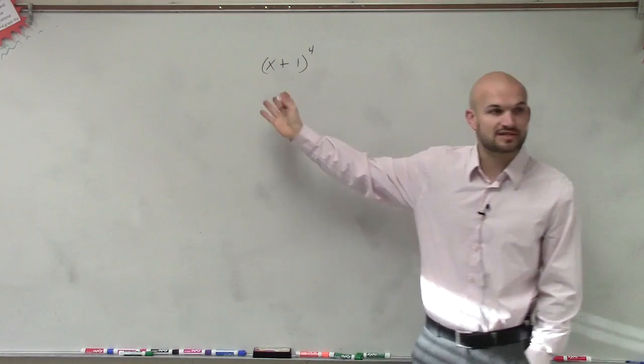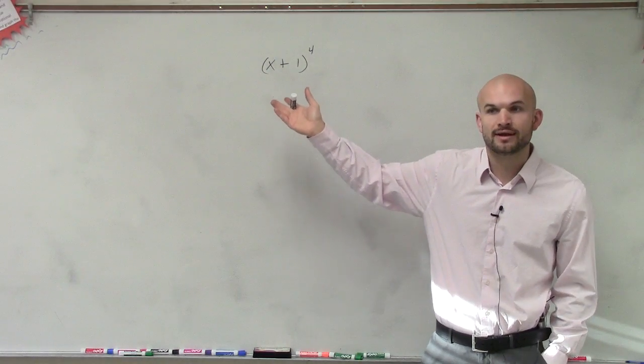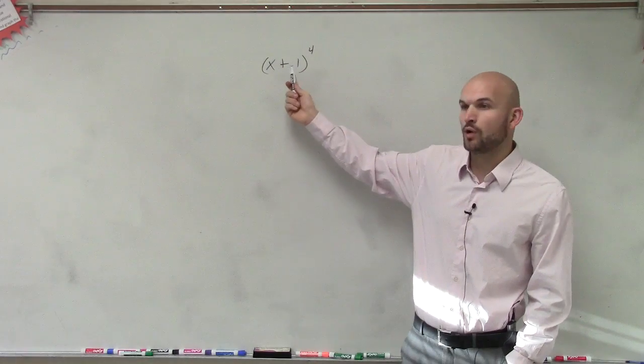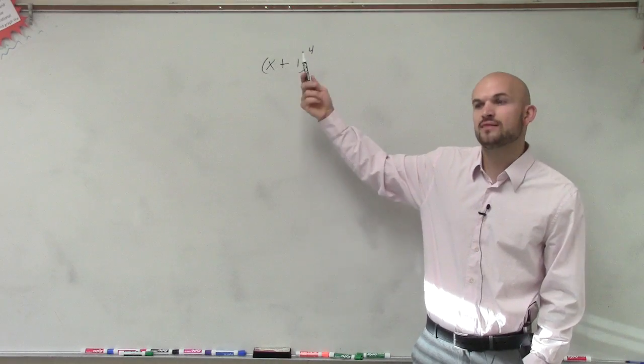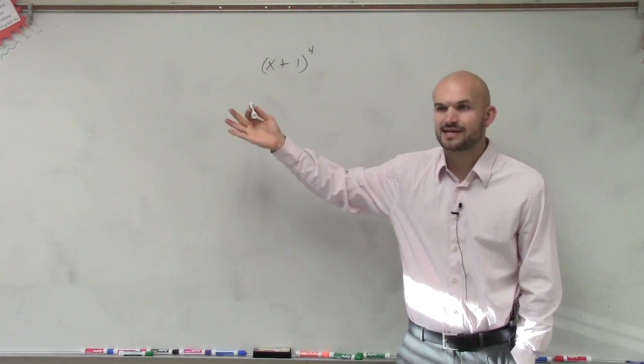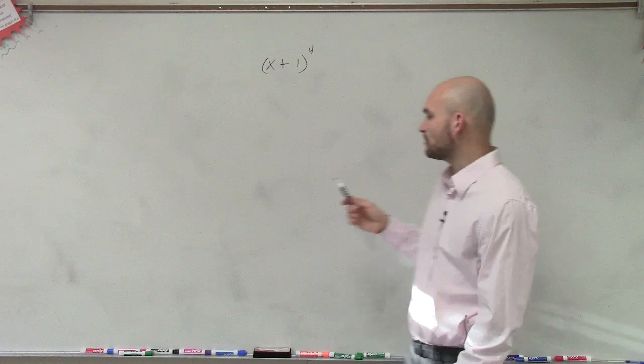Now, the difference, though, is now we're not dealing with the y. It's an x and a 1. But all that's going to mean is we're going to have 1 to the 0, 1 to the first, 1 to the second, 1 to the third, and then 1 to the fourth power, which, in this case, we all know is always going to equal 1. But we'll still write it out.